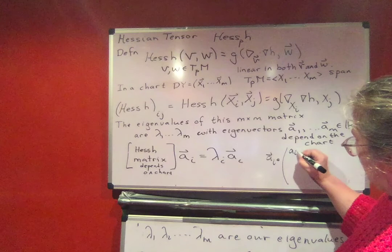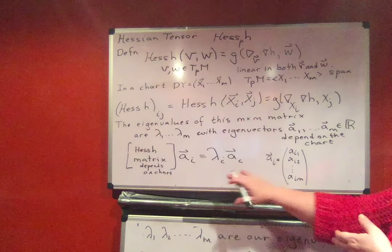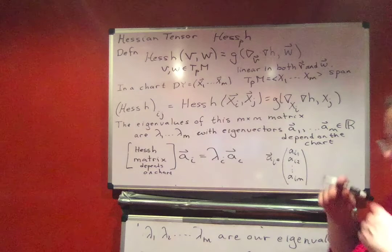a_i1, a_i2, up to a_im. Okay, so when we write it that way, then we can compare now what does this have to do with this original Hessian H as a metric tensor.